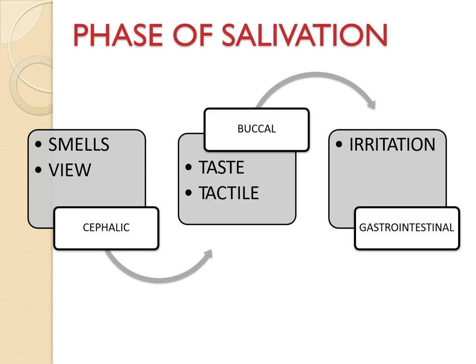Coming to the phases of salivary secretion: there are cephalic, buccal, and gastrointestinal phases. The cephalic phase refers to secretion of saliva before food enters the mouth, caused by a conditioned reflex initiated by the mere sight or smell of food. The buccal phase refers to secretion caused by stimulation of buccal receptors by the presence of food in the mouth — an unconditioned reflex partially regulated by the appetite area of the brain. The gastrointestinal phase includes esophageal, gastric and intestinal phases.